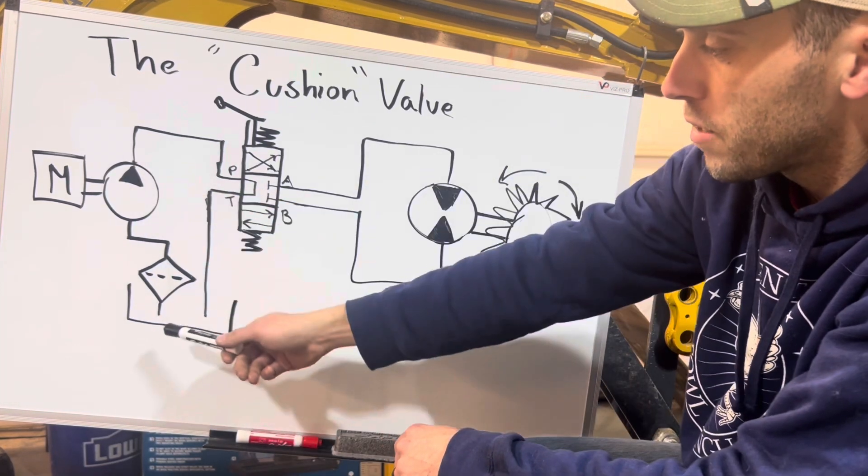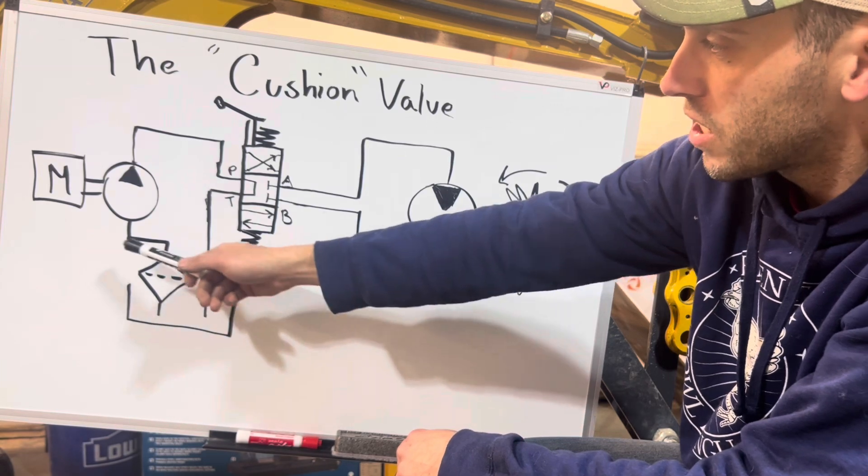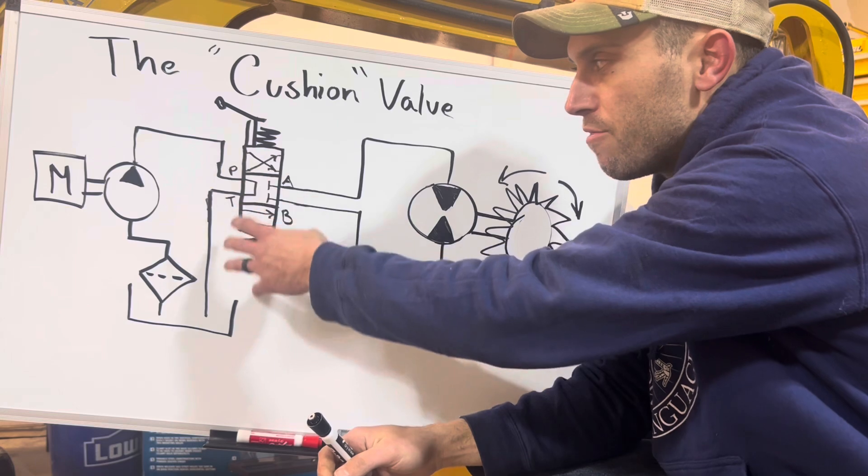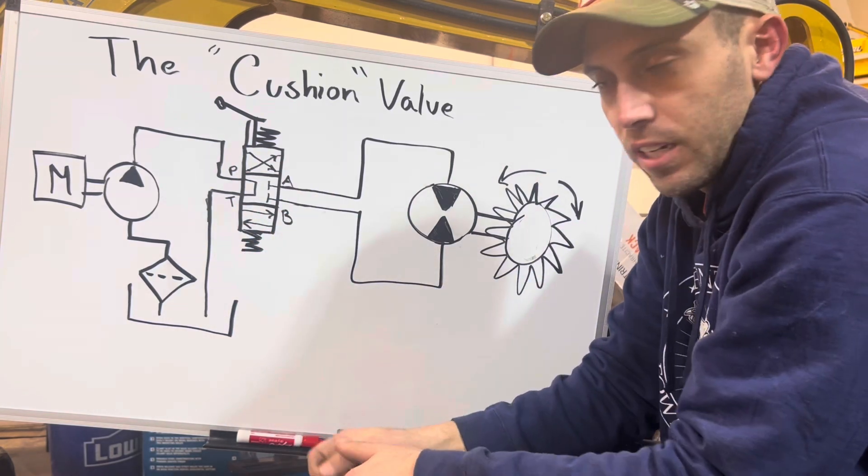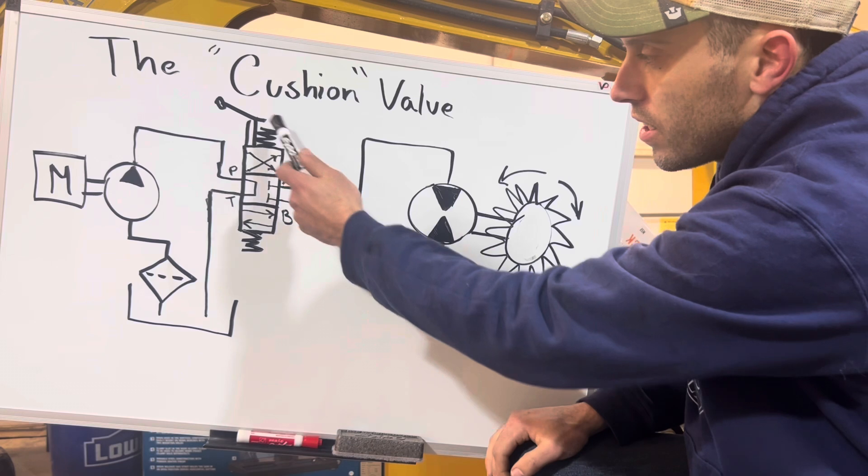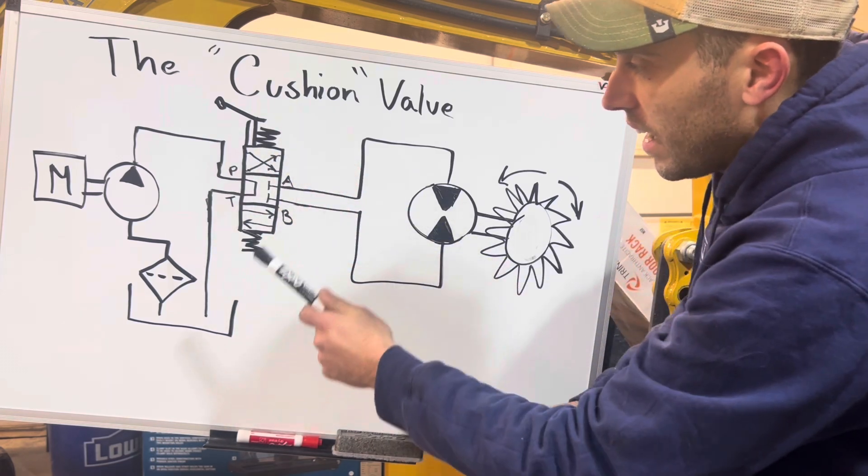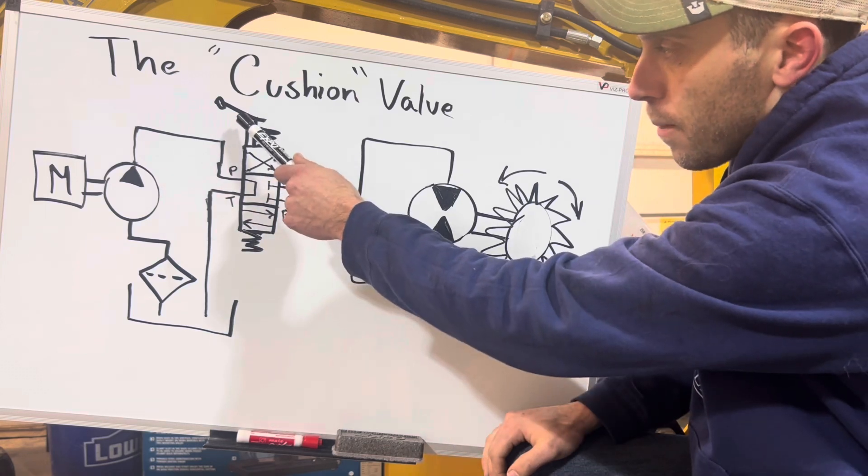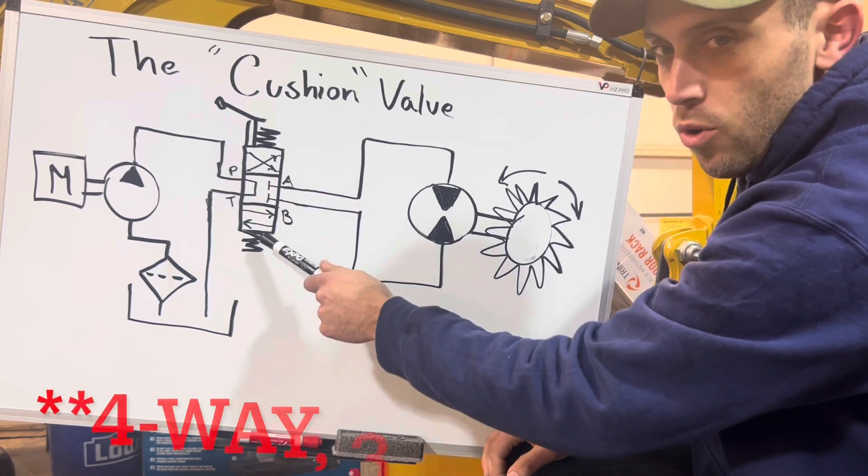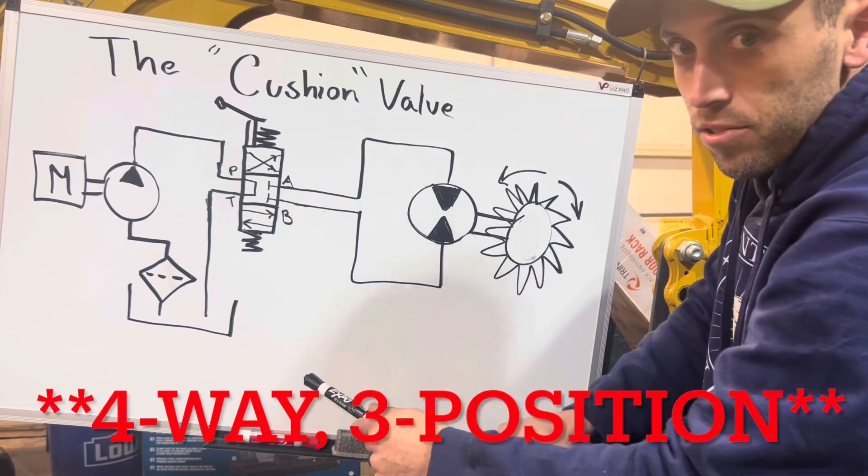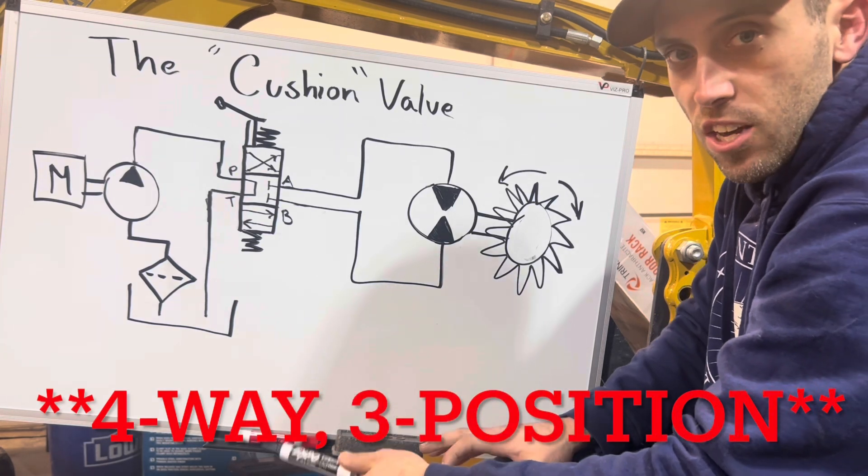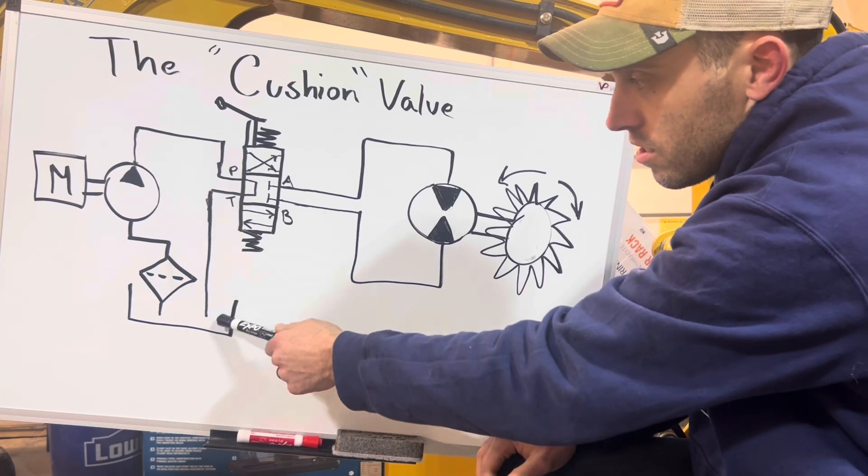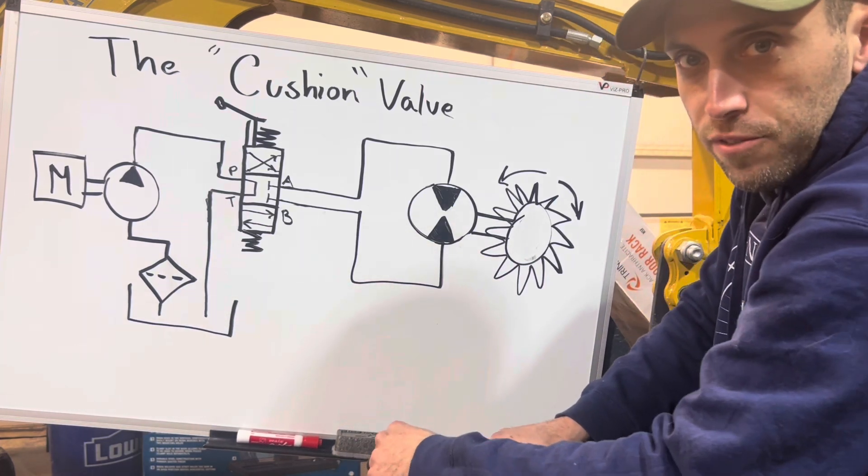So we got fluid coming up. We got our suction strainer. We come up into the pump. We come out of the pump, and essentially we end up in the valve body for all your directional control valves. Now what this is right here, this is your DCV. And what we have here is a spring centered, lever operated, three-way, and it's got a tandem center. Tandem center means when it's in the center position, the pressure just flows out the P port back to the sump, doesn't go over the relief valve or any of that stuff.